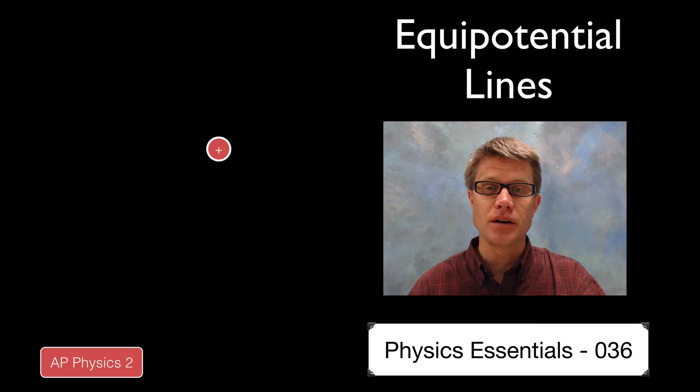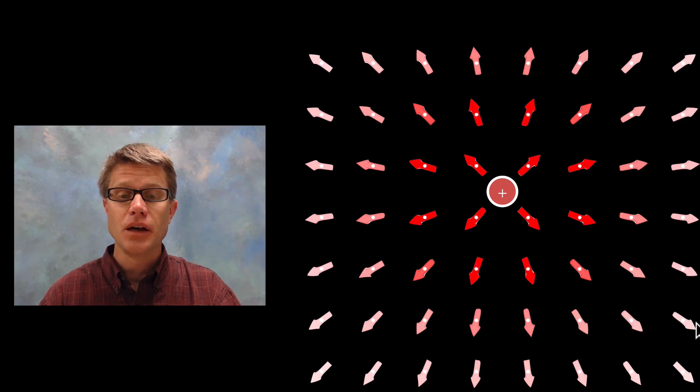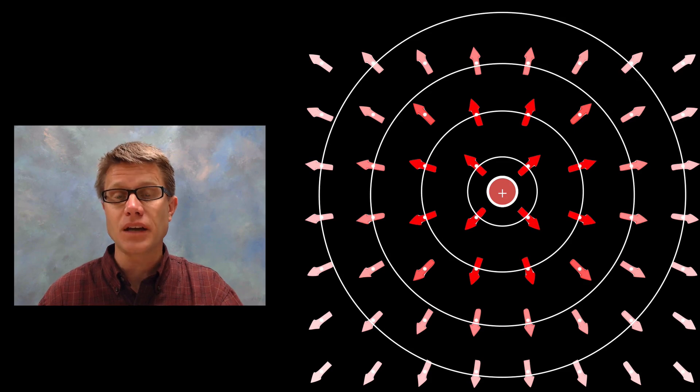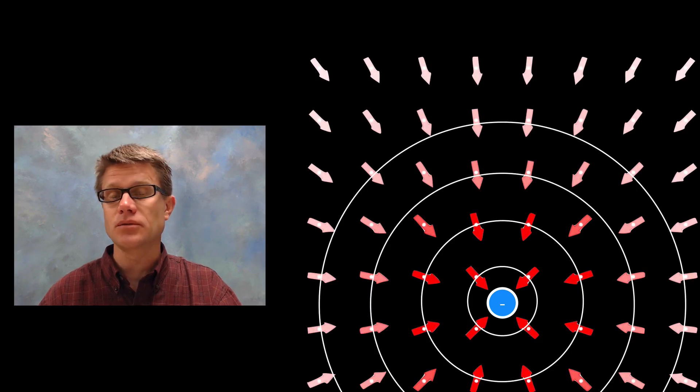So imagine we have a positive charge right here. If you were to draw the electric field, by convention we are going to move the arrows away like that. An equipotential line is going to be connecting areas in that electric field that have similar potential. You can see the arrows are changing their gradient according to the strength of the electric field — and we could connect those with equal potential lines, or iso lines as they are called. If we take a negative charge, we are going to have all of those electric field lines pointing in, and so our equipotential lines would look like that.